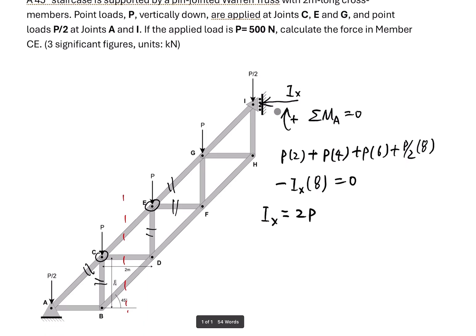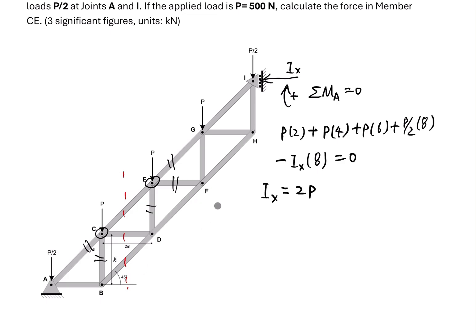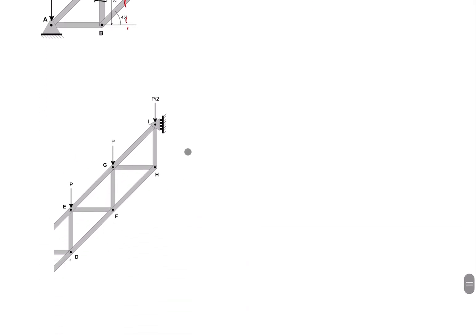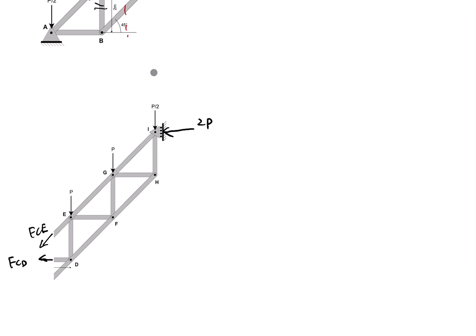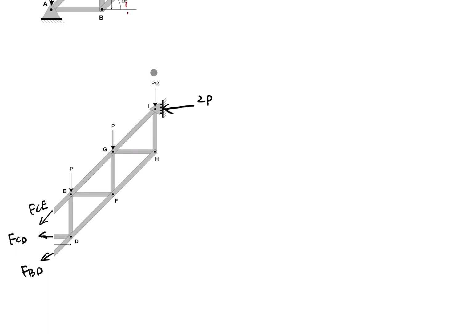With the reaction force Ix = 2P, we can now do analysis on the cut portion of the truss and solve for member force FCE. We draw the three unknown member forces: FCE, FCD, and FBD. We write down the equations of equilibrium to solve for FCE.